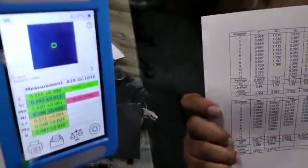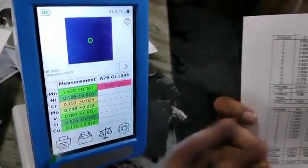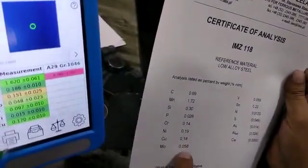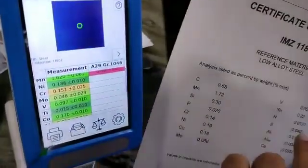1.62 is within 10%. You can see the molybdenum 0.05. Here also 0.05. And vanadium 0.09. Here you can see.